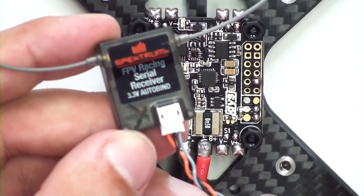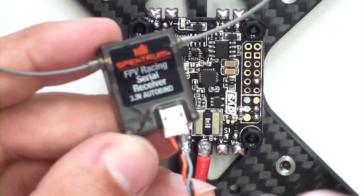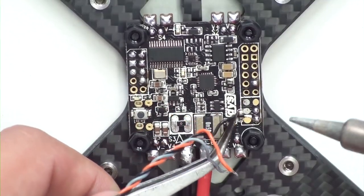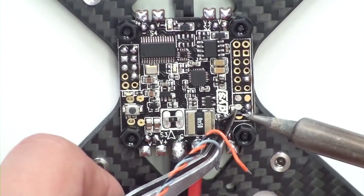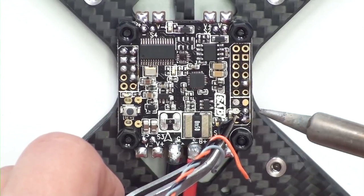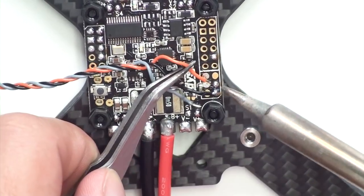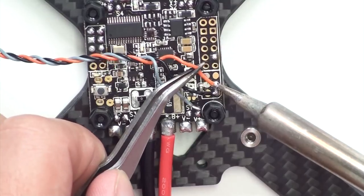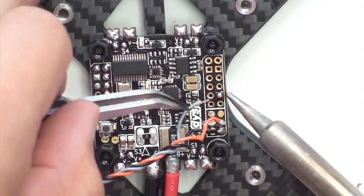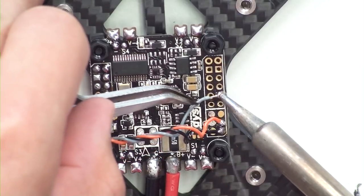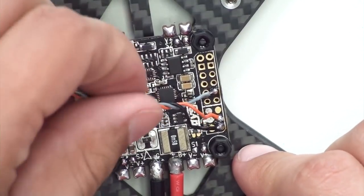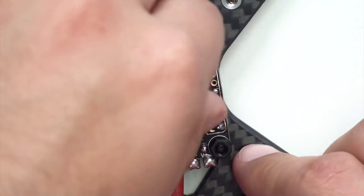Before we put any of the ESCs or motors on, I'm going to wire up the receiver since it's going to be on this side where the wires are going to cross over. This first bottom one is going to be the ground. Next will be our power. And at the top will be our SBUS signal. After that I like to twist it together just to make it nice and neat.